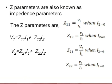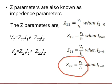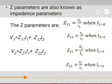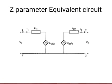Z22 equals V2 divided by I2 when I1 equals 0, that means the input is open. So Z22 is a constant called open circuit output impedance. The Z-parameter equivalent circuit of the given two-port network is as shown in the figure — this is the Z-parameter equivalent circuit.